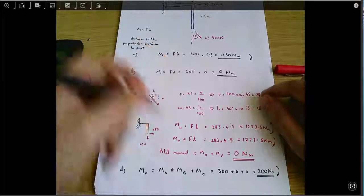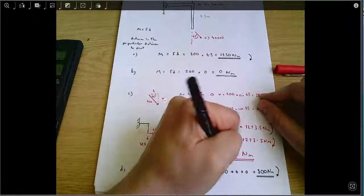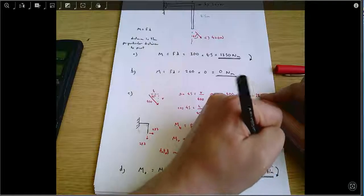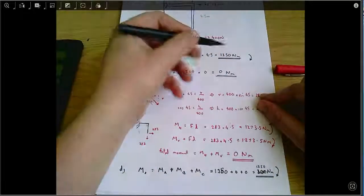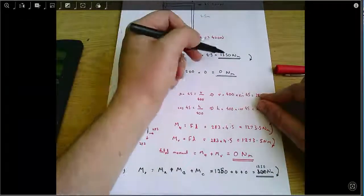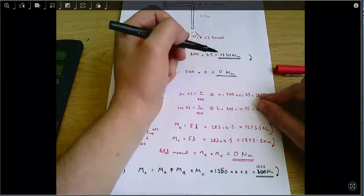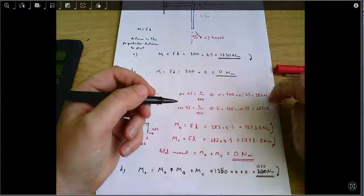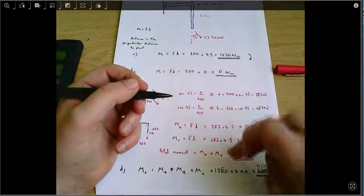Sorry, that 300 is wrong. That should be 1350. And this answer here should be 1350. I was reading, I apologize, I was reading the force rather than the moment. It's that number there that's important. So 1350 Newton meters is the correct answer, plus zero, plus zero.